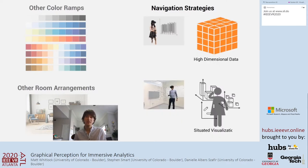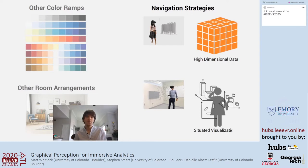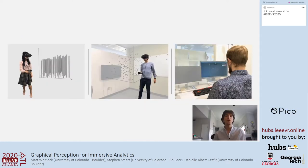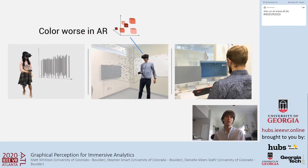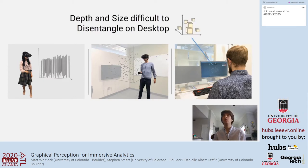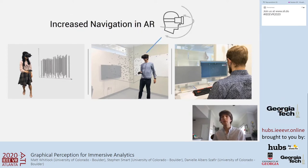With further study, we may find that different display types are better suited to different visualization types. Based on the finding that people are more willing to navigate in AR than in VR, we might find that higher dimensional data is better displayed in VR, whereas AR displays may be better suited to smaller situated visualizations. With our empirical study, we've identified key differences: color perception was worse in AR, size was difficult to disentangle from depth on desktop, and participants were more comfortable navigating in AR.